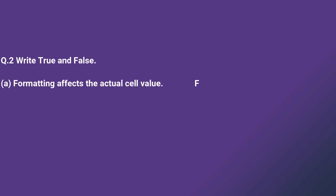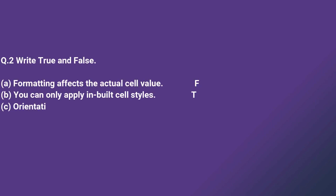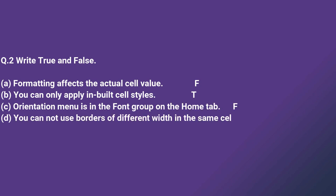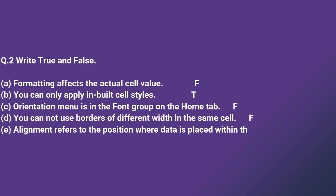Second section is True and False. First: formatting affects the actual cell value — No. You can only apply inbuilt cell style — True. Orientation menu is in the Font group or Text on the Home tab. You cannot use borders of different widths in the same cell — False. Alignment refers to the position where data is placed within the boundary of a cell — True.